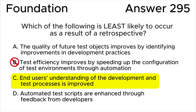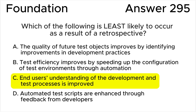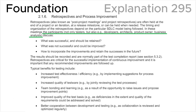Answer B is incorrect because a benefit of retrospectives from testing includes increased test efficiency through process improvements, so this is likely to occur as a result of a retrospective. Answer D is incorrect because a benefit of retrospectives for testing includes improved quality of test ware, including automated test scripts, through joint reviews with developers — so this is also likely to occur as a result of a retrospective.